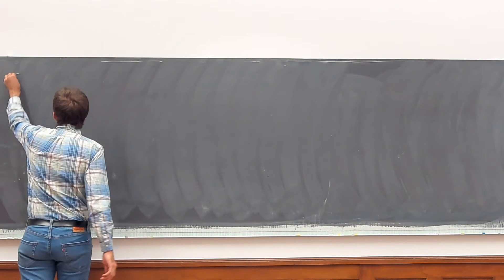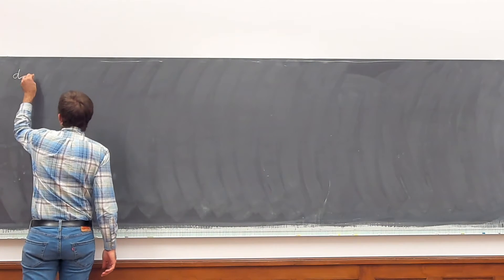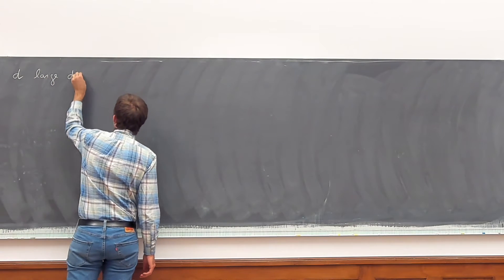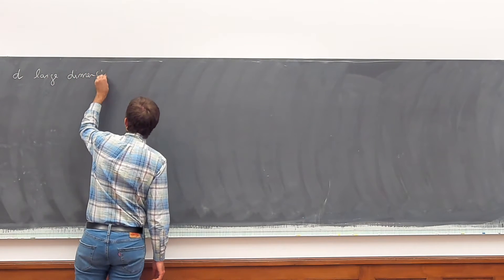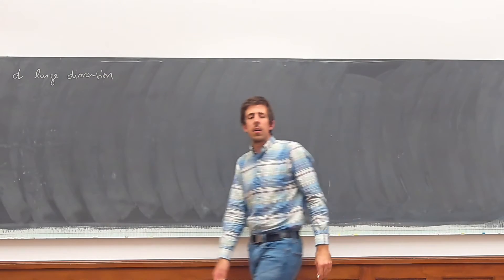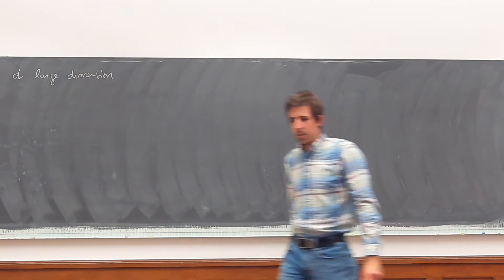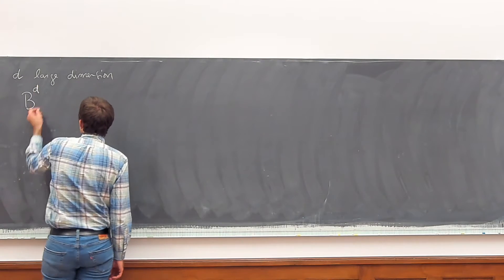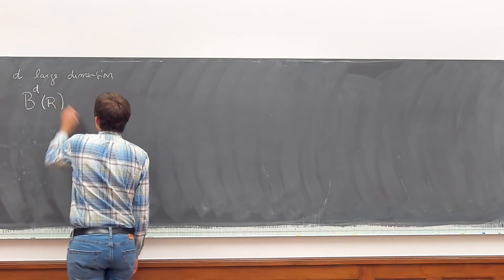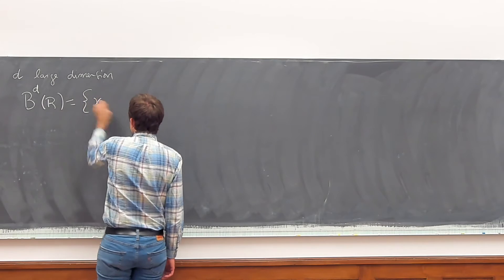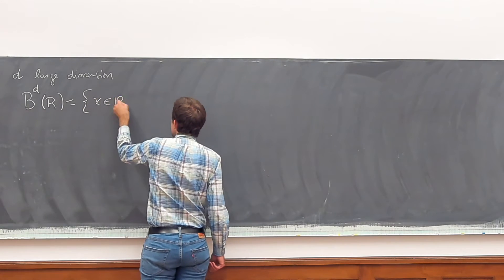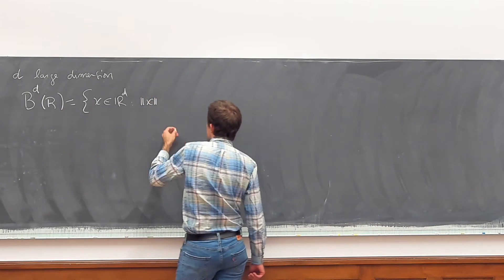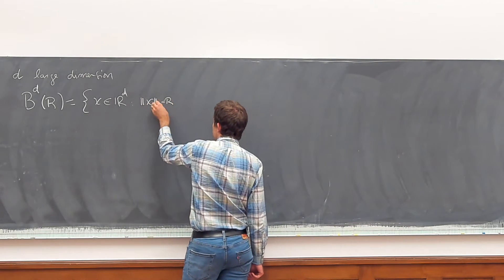Let's think of d as large — it is the dimension. So let's take two sets. Let's take the ball of radius R. This is the set of points in R^d such that the norm of x is less than or equal to R.